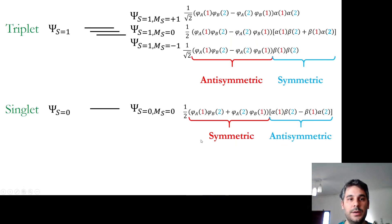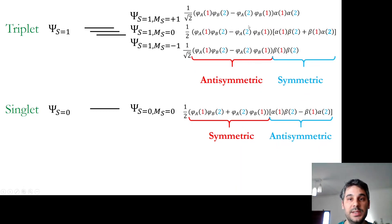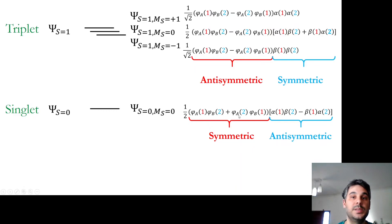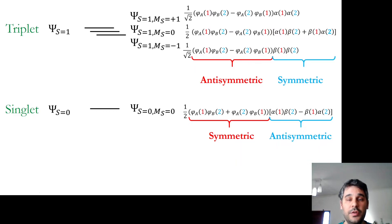To sum up, the triplet and singlet wave functions for two electrons in different orbitals a and b can be written as these expressions: the triplet wave functions are anti-symmetric in the spatial part and symmetric in the spin part, while the singlet wave function is symmetric in the spatial part and anti-symmetric in the spin part. In the following video, we will see how to use this to calculate singlet-triplet gaps in single-determinant methods such as density functional theory. Thank you very much.